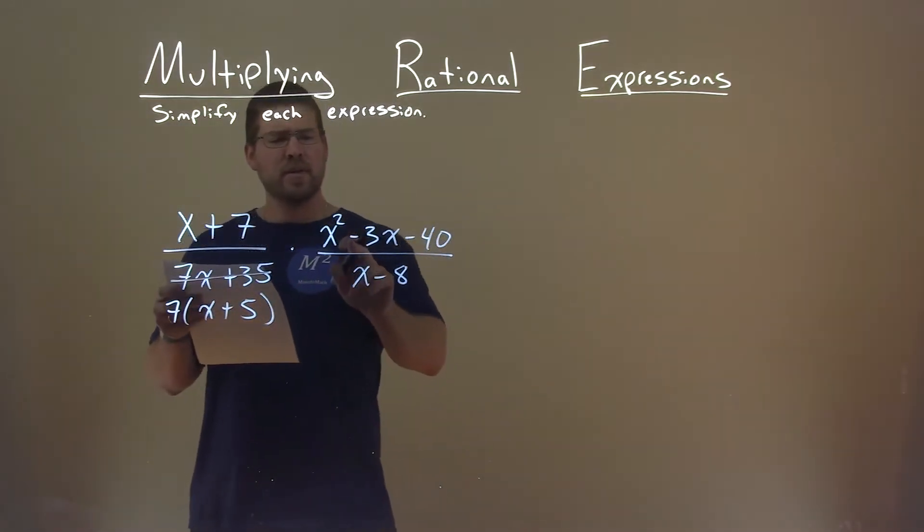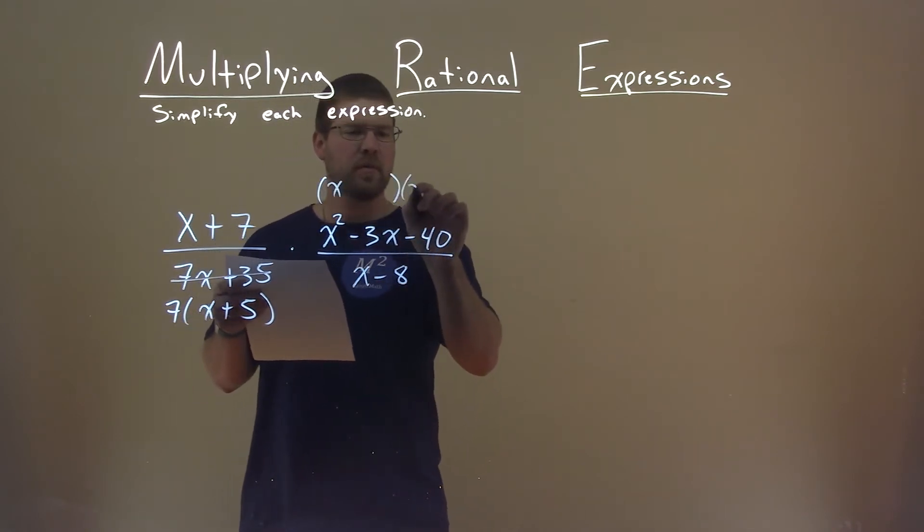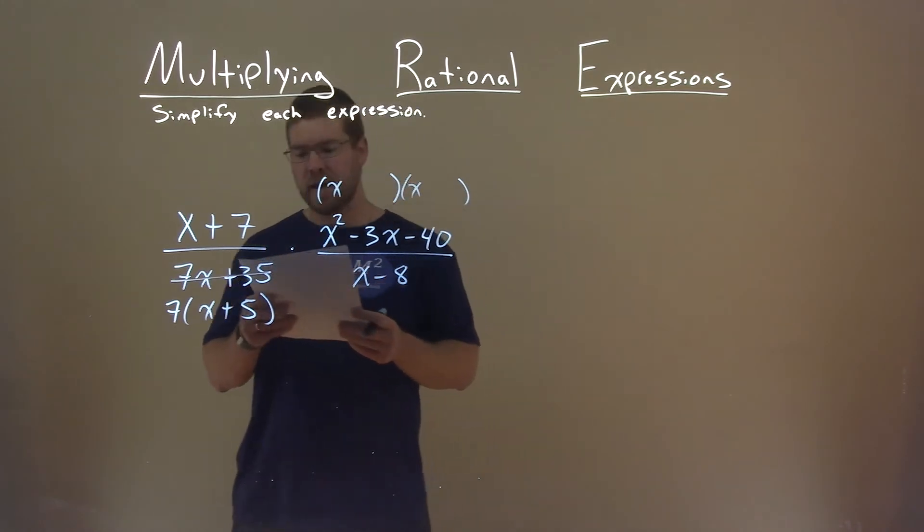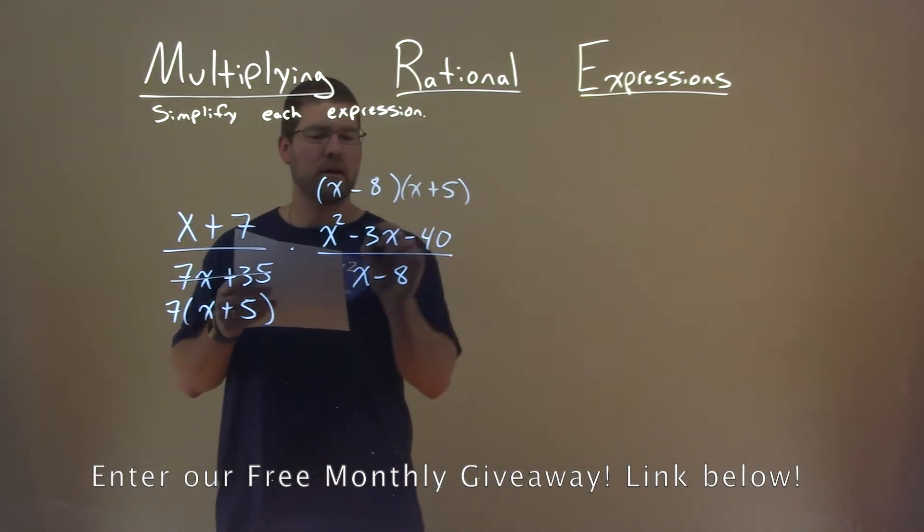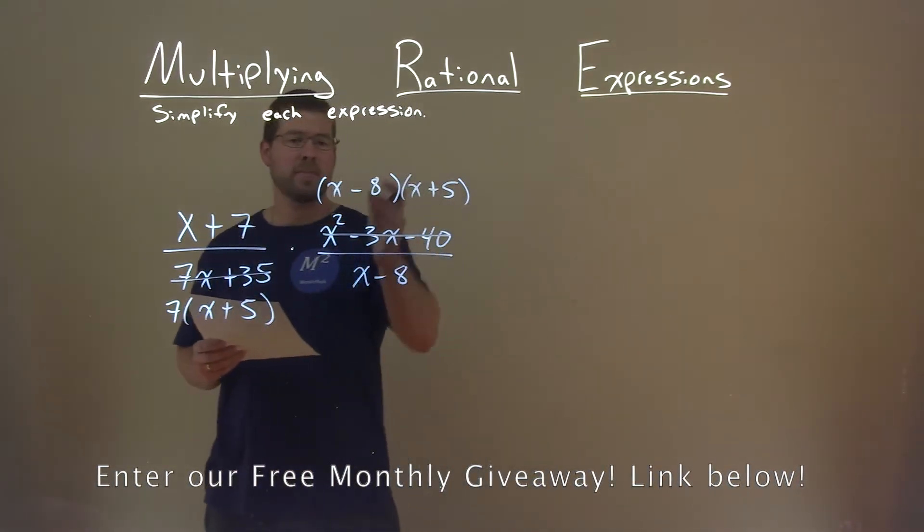Then, well, this upper part here can factor. So, what two numbers multiply to be negative 40 but add to be a negative 3? That's a negative 8 and a positive 5. So I'm rewriting that x squared minus 3x minus 40 in factored form.